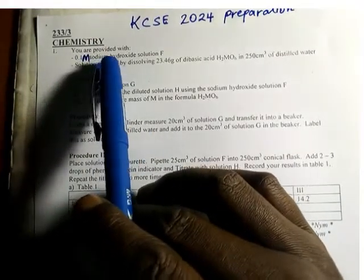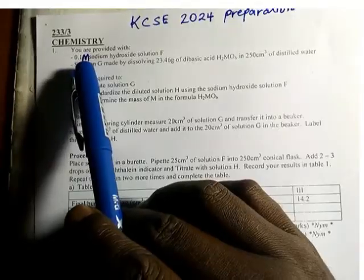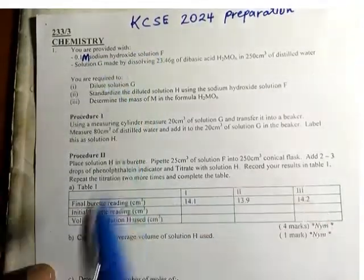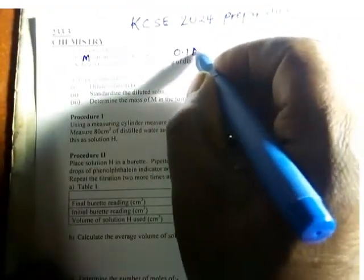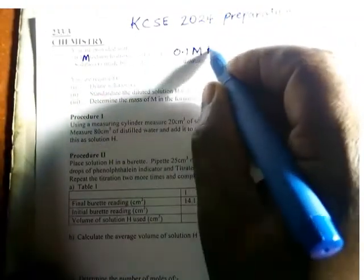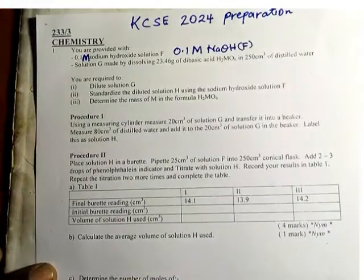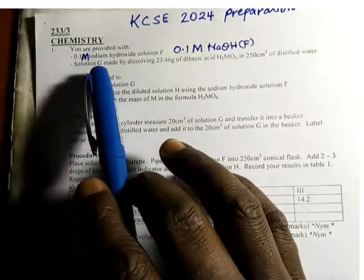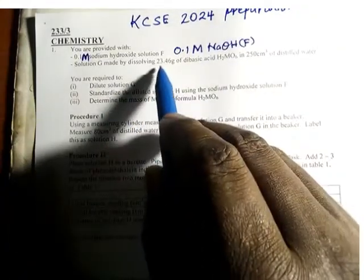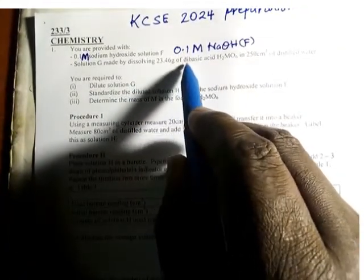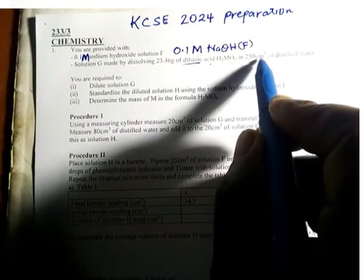You are provided with 0.1 M sodium hydroxide solution F. Solution G is made by dissolving 23.46 grams of dibasic acid in 250 cm³ of distilled water.